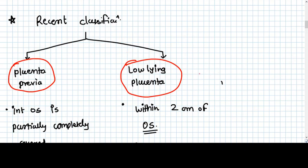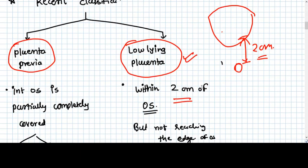Why we classify things? Again, I'm telling we do classify for easy description and management. For example, if there is a low-lying placenta, that means the placenta, the lowest edge of placenta is within two centimeters of the os. Low-lying placenta means the lower edge of placenta is within two centimeters of the internal os. We can go for vaginal delivery in this case.